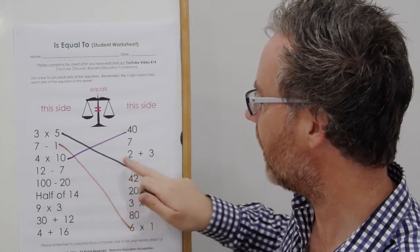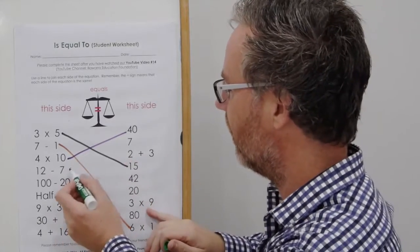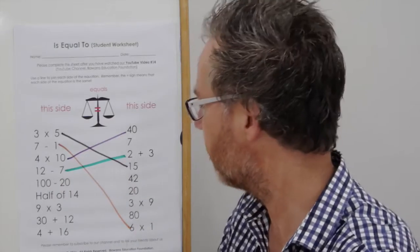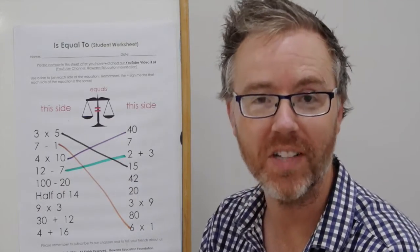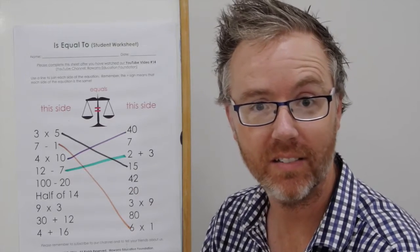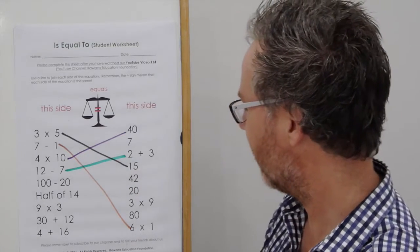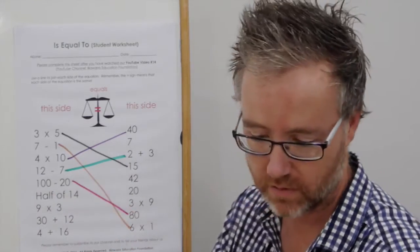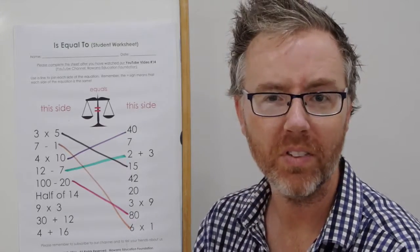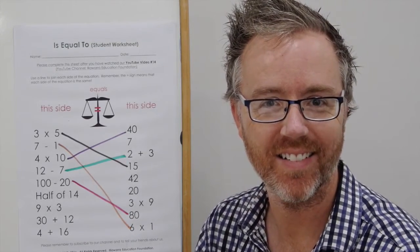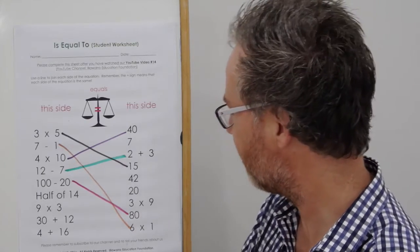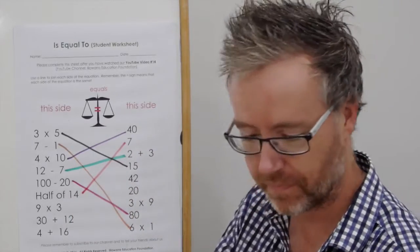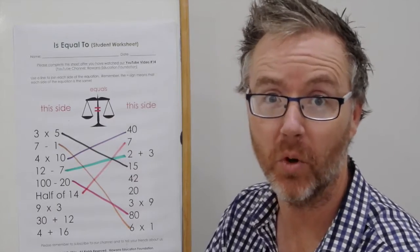So, 12 take away 7 is equal to 2 plus 3. 100 take away 20. Answer. Hope you got 80. What's half of 14? Come up with 7. A few more to go.